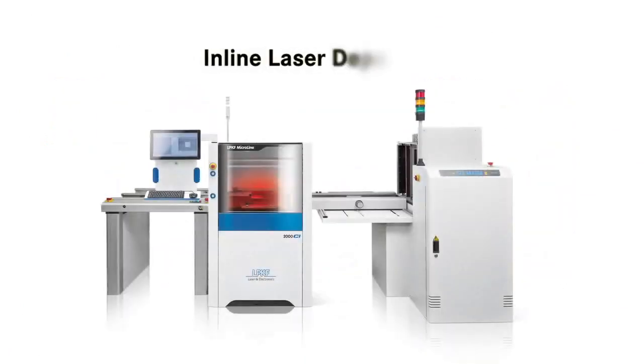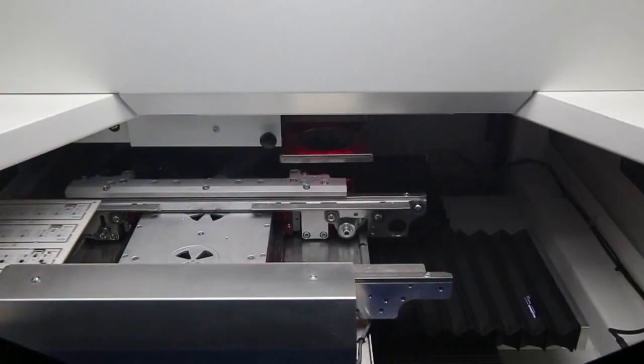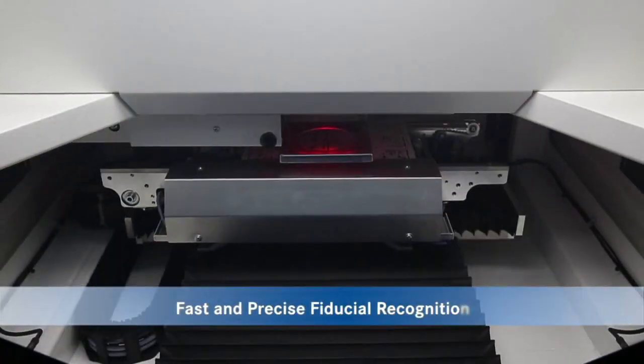Available in multiple configurations for either manual or automated production lines, the MicroLine 2000 CI model has been designed with an integrated conveyor system for automated loading and unloading of production PCB panels.